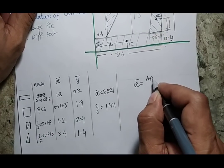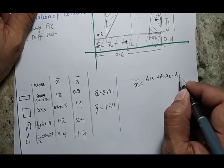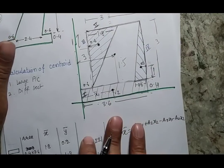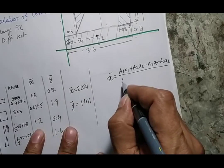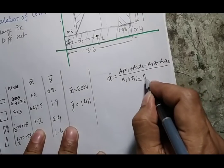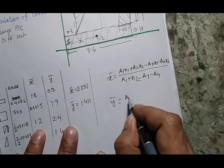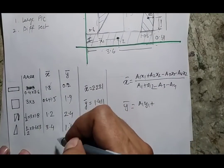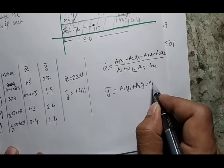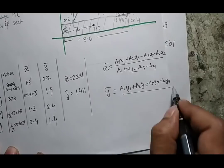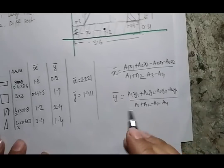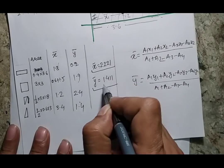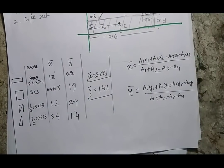The x-bar formula is: x̄ = (A1·x1 + A2·x2 − A3·x3 − A4·x4) / (A1 + A2 − A3 − A4). Note that sections 3 and 4 are subtracted since those triangles are not physically present. Similarly, ȳ = (A1·y1 + A2·y2 − A3·y3 − A4·y4) / (A1 + A2 − A3 − A4). Substituting all values gives x̄ = 2.221 and ȳ = 1.411.